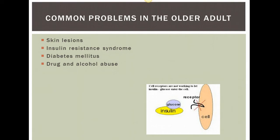This is the second part of your geriatric skills lab lecture, and we are reviewing common problems in the older adult. On the next couple of slides, we will be looking at skin lesions, insulin resistance syndrome, diabetes mellitus, and drug and alcohol abuse.